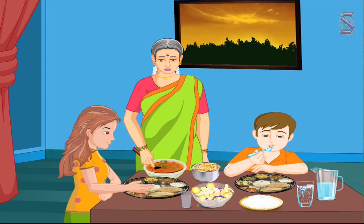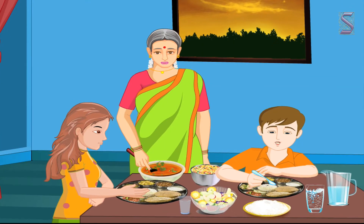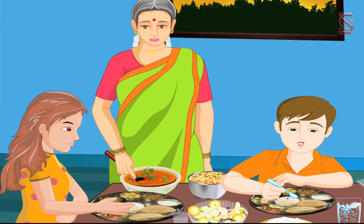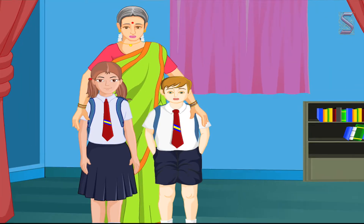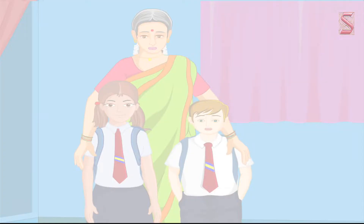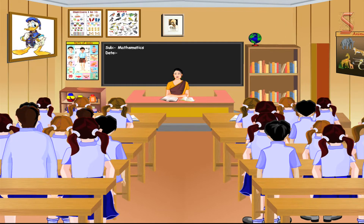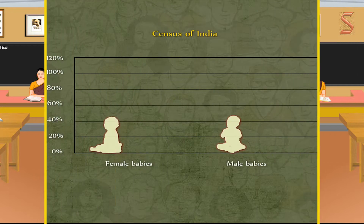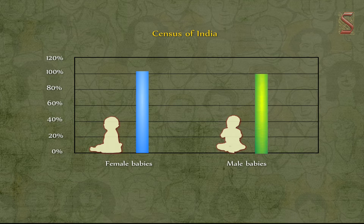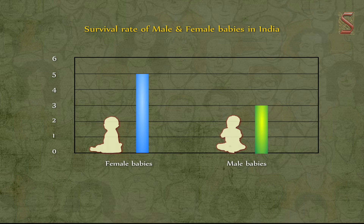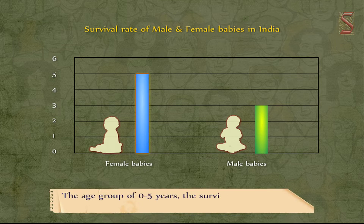According to medical research, if girls are given similar circumstances for living as boys, girl children survive much better than boys. From this we can understand that had there been no discrimination, the number of girls would be higher or equal to the number of boys. The census of India also brings out that 103 female babies are born against 100 male babies.